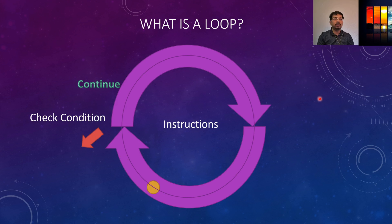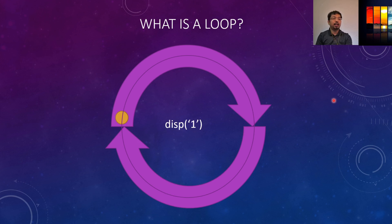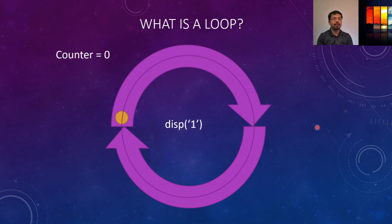If the condition is false, it's going to exit the loop and not further execute any other commands. Let's see an example with this loop command. Here is a loop and we have a disp command to display the number one. We will run this loop at a certain period of time so that the number one should be displayed in our output. Let's say we have a variable counter and set it to zero, and now we'll see the output on the right.